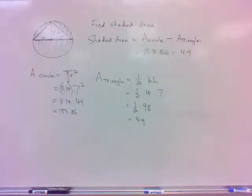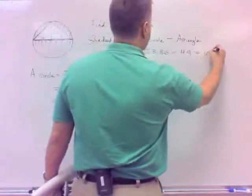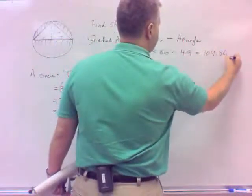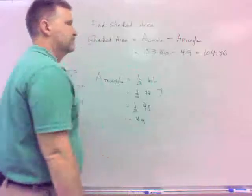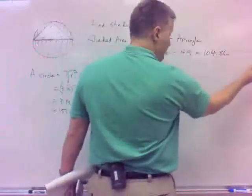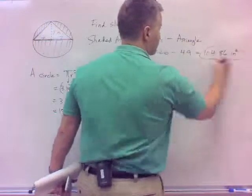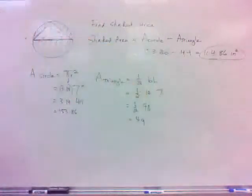So what's the shaded area? What's the difference of those two? 104.86. What is units? Well, it's area, so area is always square. So it's inches squared, 104.86 inches squared.